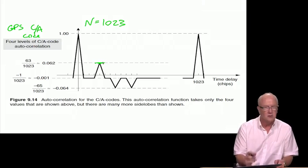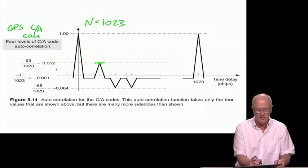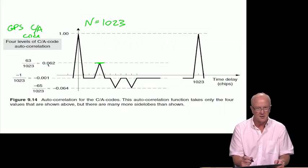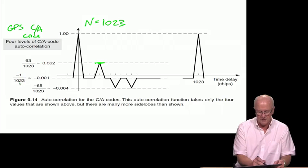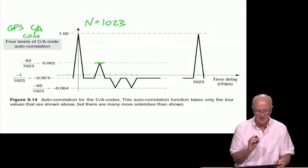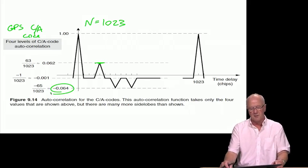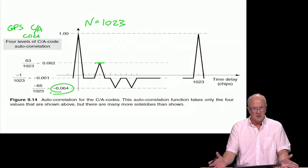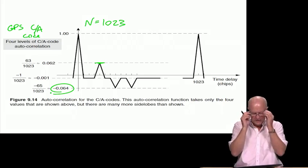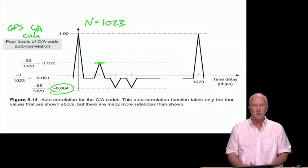The side lobes become relatively much smaller. We have 63 over 1,023, or only 0.062, so 6% of the main peak. Then we have minus 1 over 1,023, 0.001, so only 0.1% of the peak and then finally down here below we have something at 6.4% of the peak. Generally speaking this is fine and it has given amazing utility to the CA code for GPS. This is the operation that goes on over and over again in your smartphone and this is the property that really drives it forward.